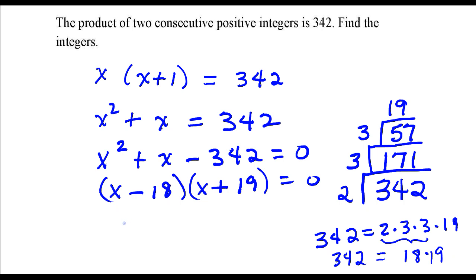Now I'll go ahead and solve each of these. x minus 18 equals 0, so x is 18. And this one, x plus 19 equals 0.